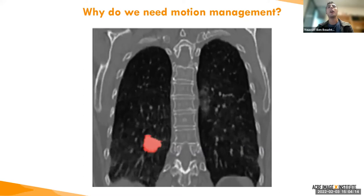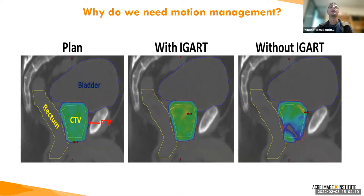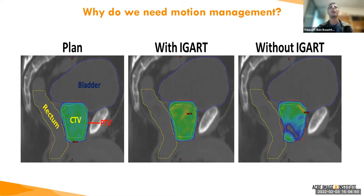You can see the impact with this prostate plan. On the left is the plan with the dose as calculated during the planning phase. On the right is the dose that would be delivered if there was no motion management. In the middle, you can see that the actual dose delivered with some motion management will be more closely equal to the plan dose, as opposed to what would happen without motion management.